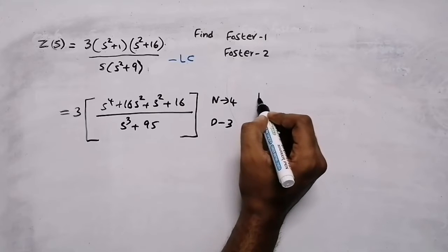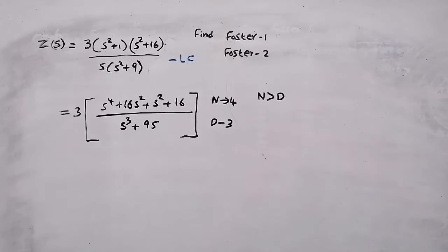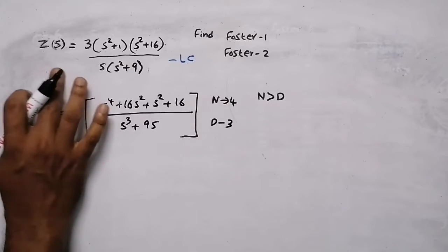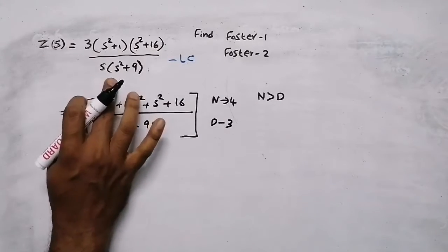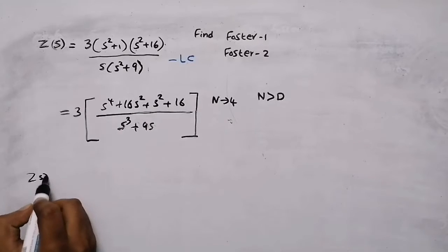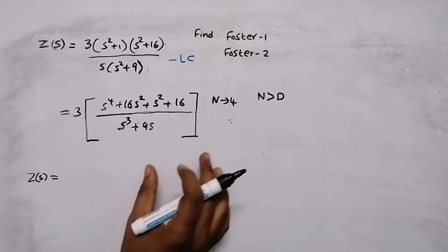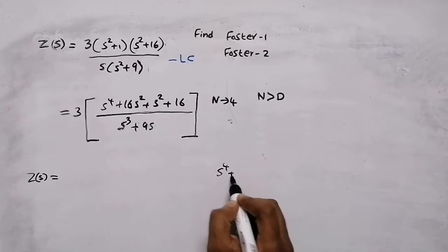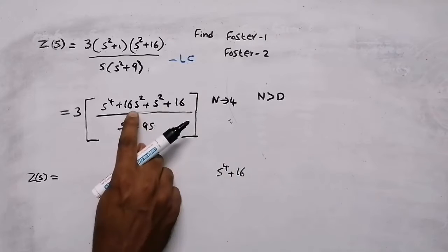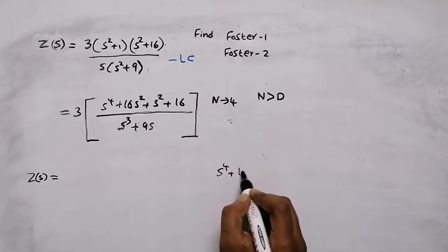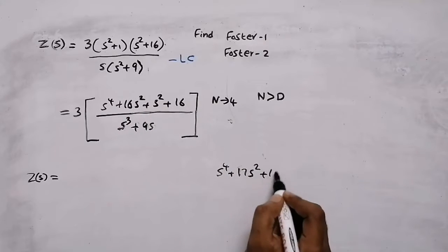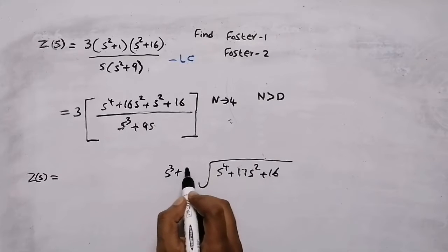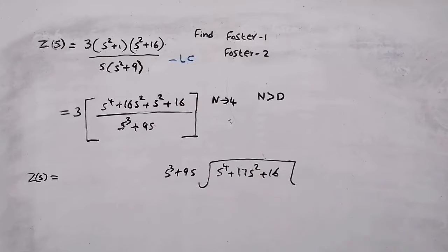Since the order of the numerator is greater than the order of the denominator, we can't proceed directly with this impedance function. We need to find a new impedance function by performing long division. We divide the numerator — s raised to 4 plus 17s squared plus 16 — by the denominator s cubed plus 9s.